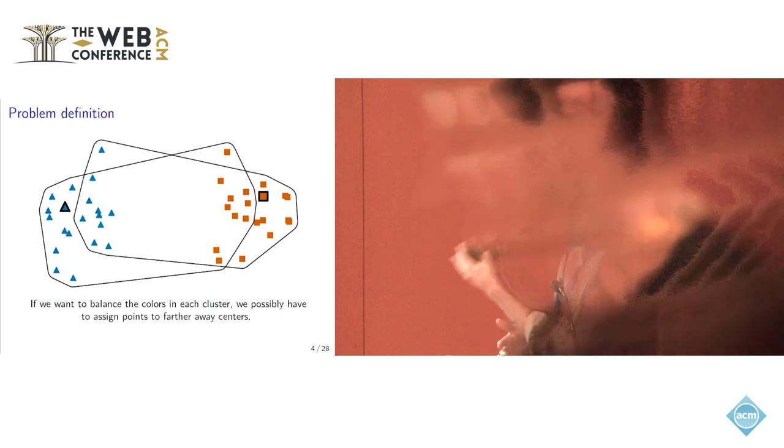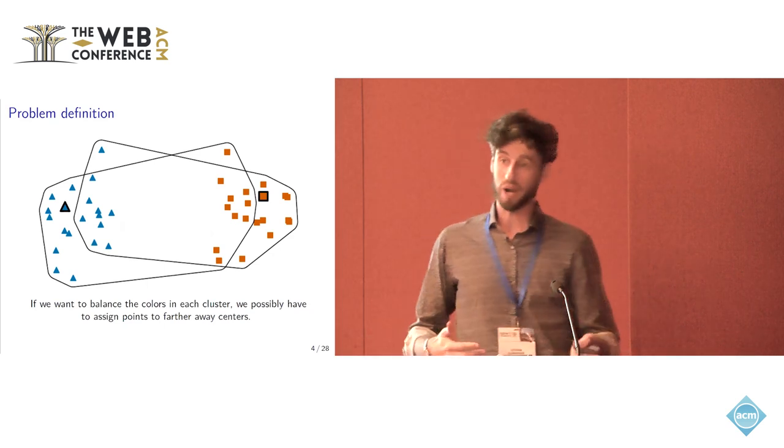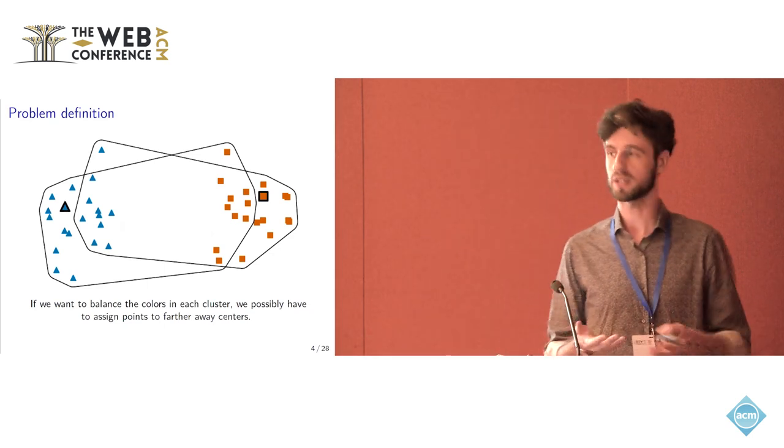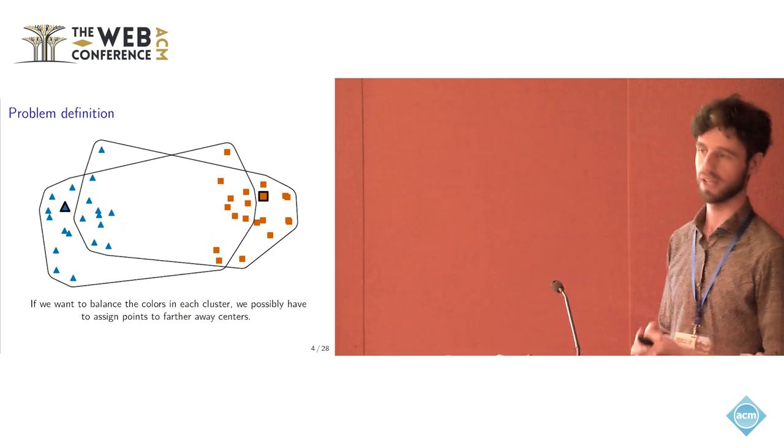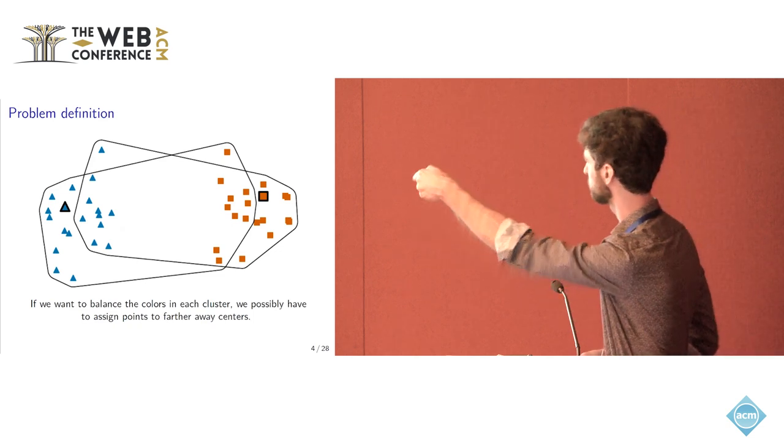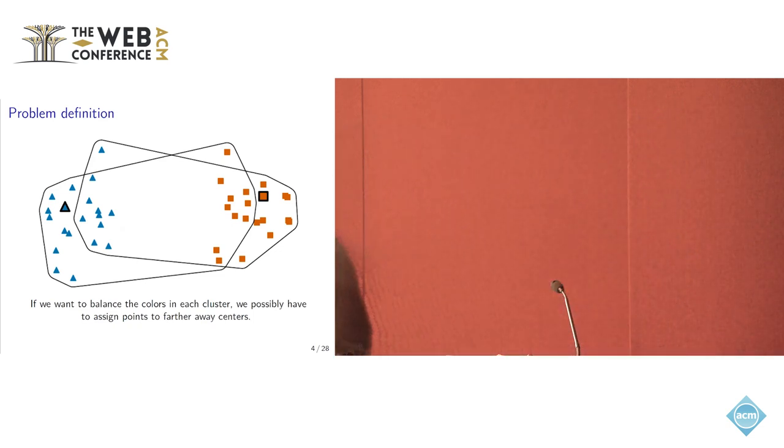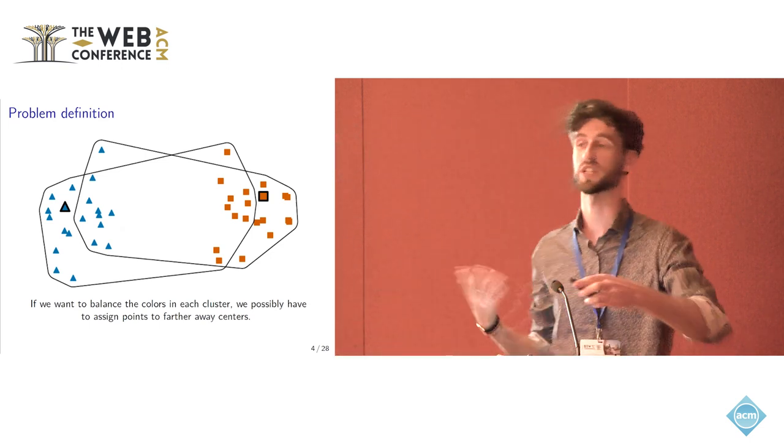So you might want to have a situation such as this. Now, of course, the radius is worse, but we have more fairness because we are balancing the number of people. So like this parallel here, the triangle up there, is assigned to the cluster at the far end just to ensure fairness.